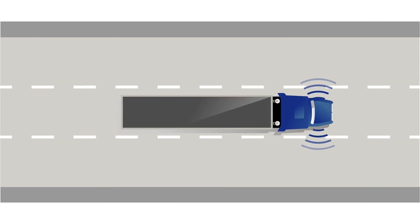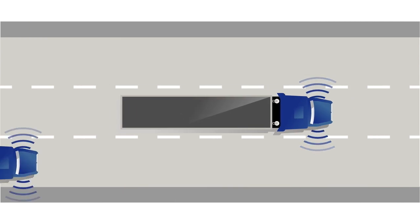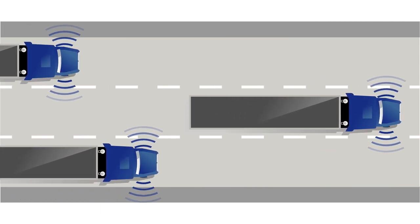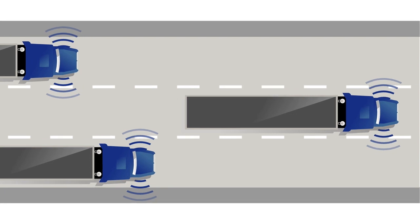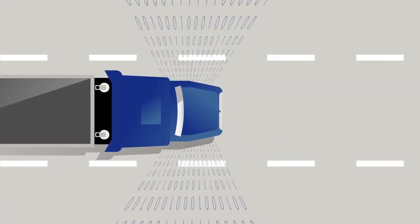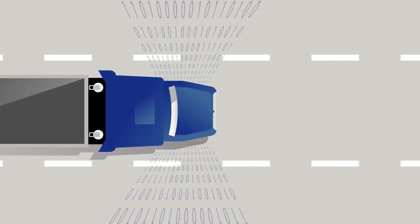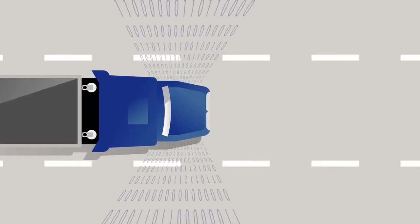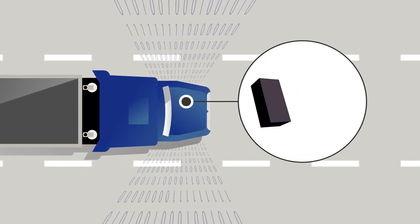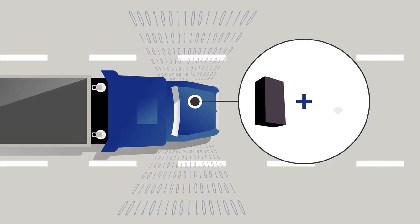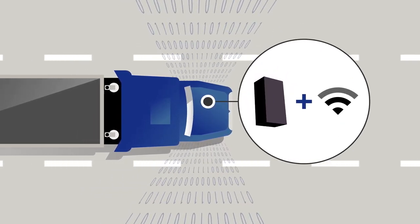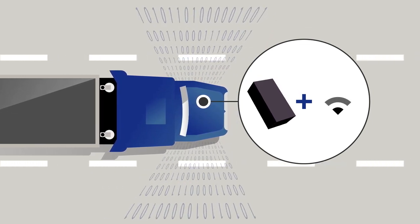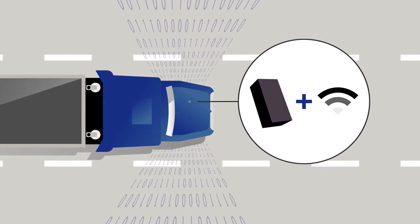Telematics has been in the trucking industry for well over a decade and is often used for daily fleet operations. Telematics systems transmit a broad set of vehicle and engine data from a cellular device on a truck. Each system requires a hardware device and a cellular data subscription to transmit this vehicle data back to fleet managers.